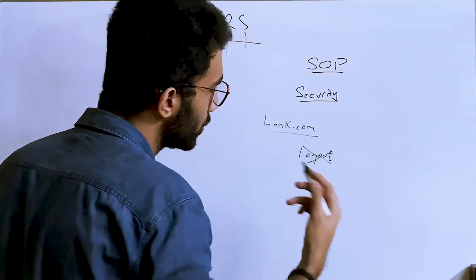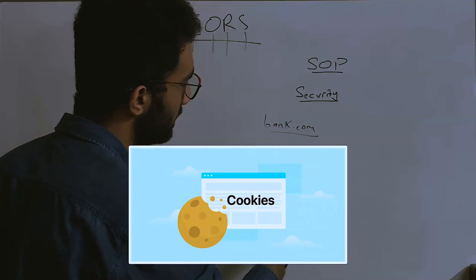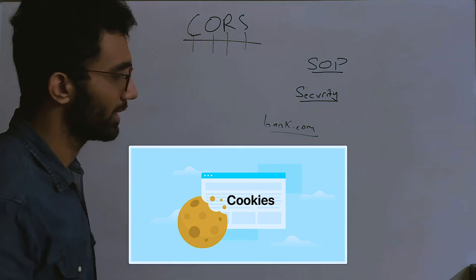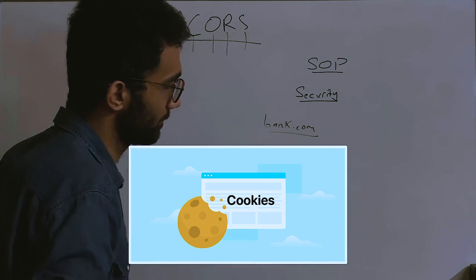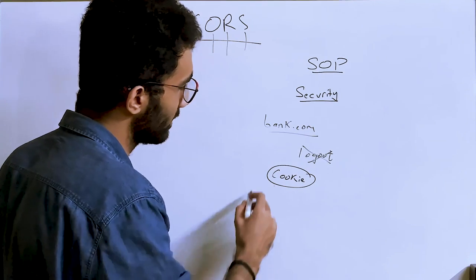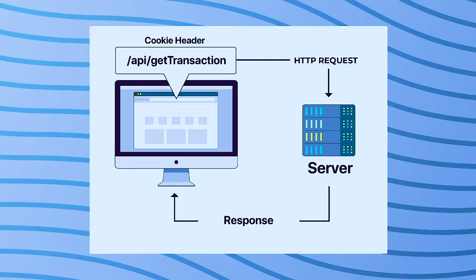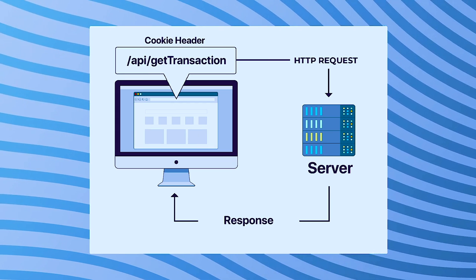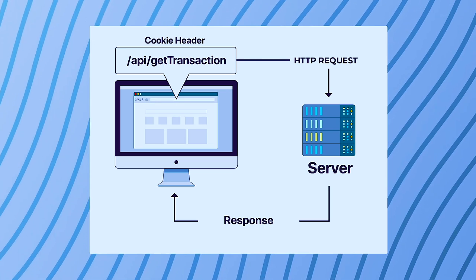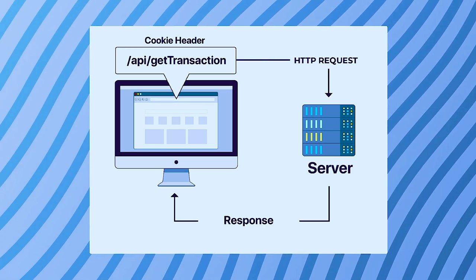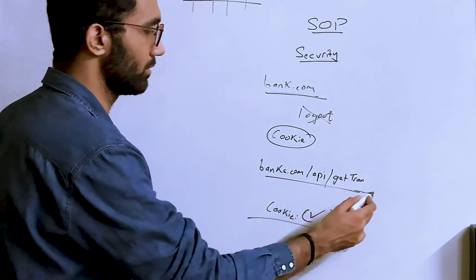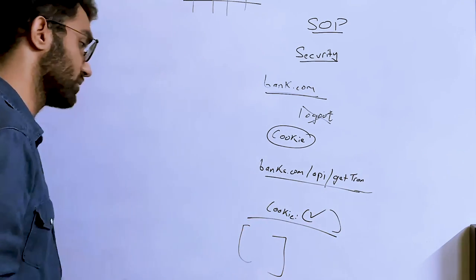When you land on bank.com and it calls an API like `/api/get-transaction`, your browser automatically sends the cookie header with your legitimate value. That's why you're able to see all your transactions on the dashboard on the first load. This is great user experience, but it introduces a security problem.